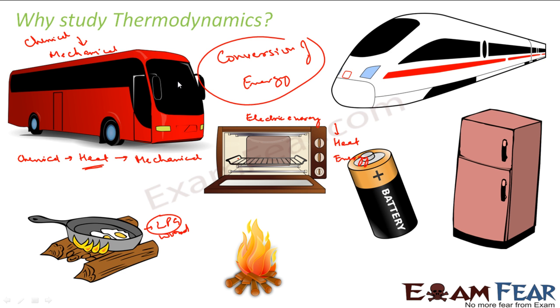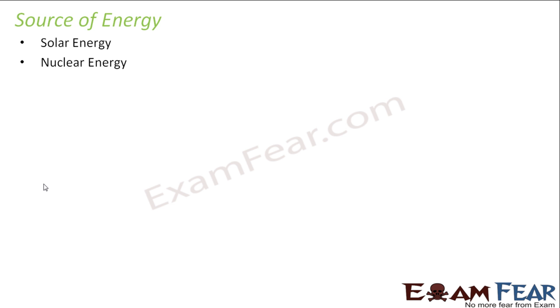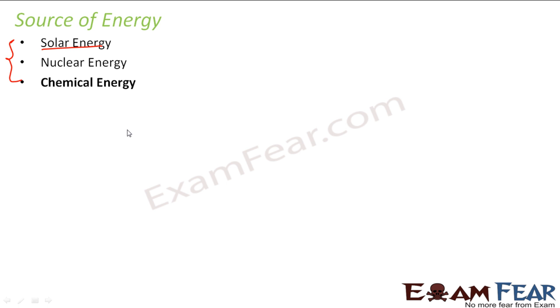In thermodynamics we deal with all this conversion — how energy is converted from one form to another, what is the efficiency, how much is lost, and whether it is feasible to convert one form of energy into another. The first basic source is solar energy — in fact, all other energies are, I will say, children of solar energy. Then we have nuclear energy and chemical energy. We will be focusing more on chemical energy because we are studying thermodynamics in chemistry.